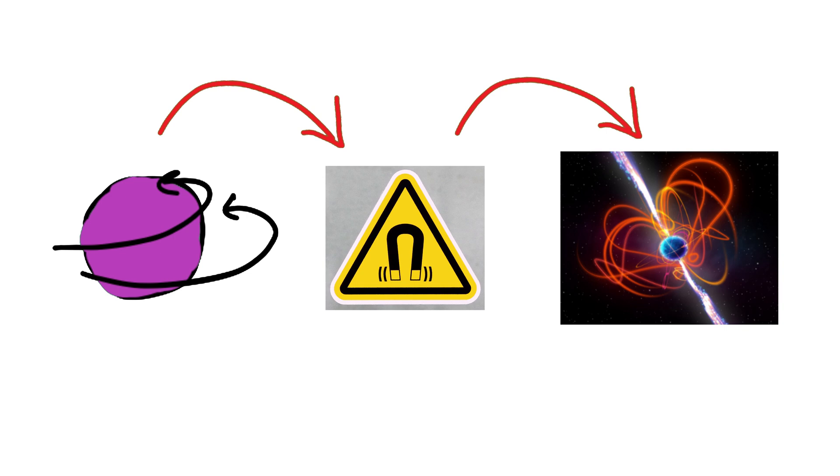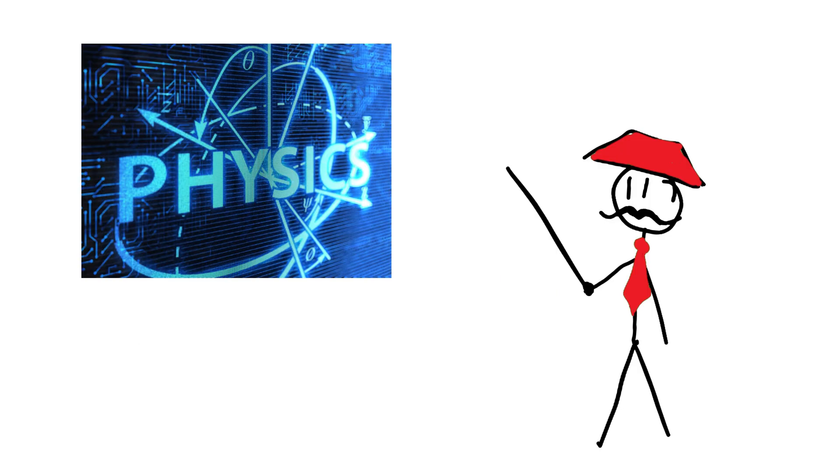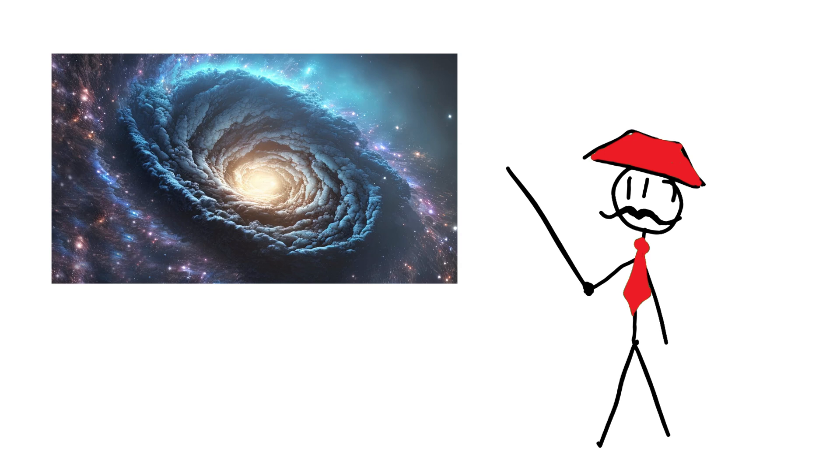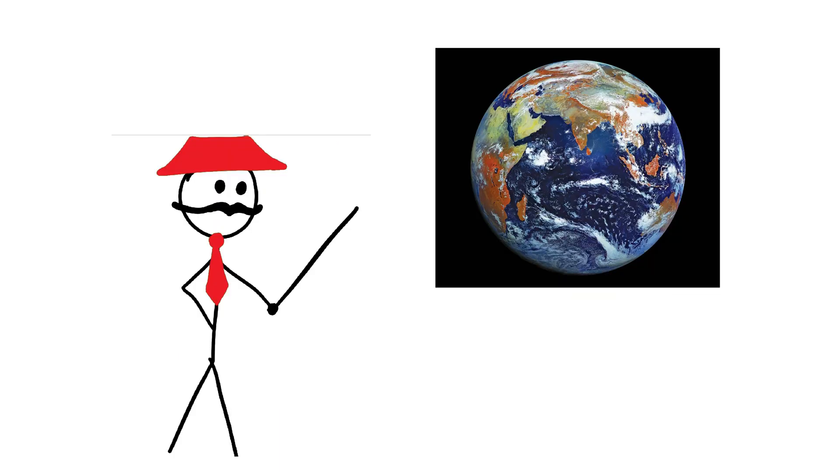This rapid spinning and strong magnetic fields make neutron stars emit beams of radiation, which can be detected by telescopes on Earth. These are called pulsars. Neutron stars are important for studying extreme physics and the universe's most energetic events. They also help scientists understand how matter behaves under extreme conditions, which can't be recreated on Earth.